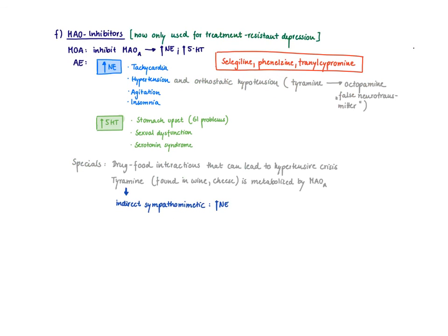The last class are the MAO inhibitors. They are no longer first-line medications - they're only used for treatment-resistant depression when everything else has been tried. They inhibit monoamine oxidase A, which is mainly responsible for breaking down norepinephrine and serotonin, and that is how they increase those neurotransmitter levels. Examples include selegiline - the only antidepressant available as a patch formulation - as well as phenelzine and tranylcypromine. Adverse effects are predictable based on increasing norepinephrine and serotonin.